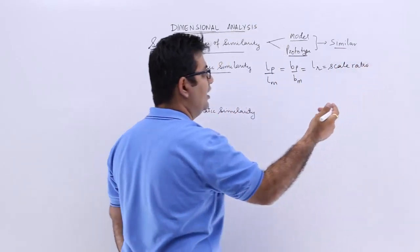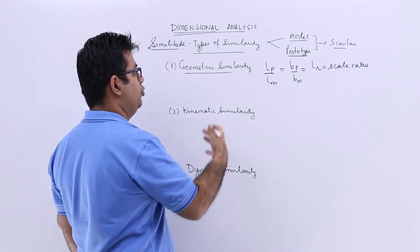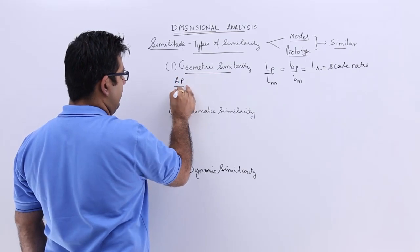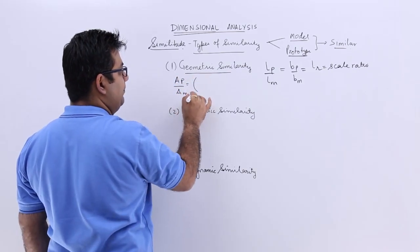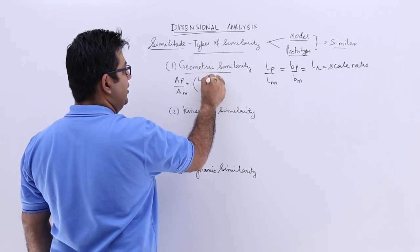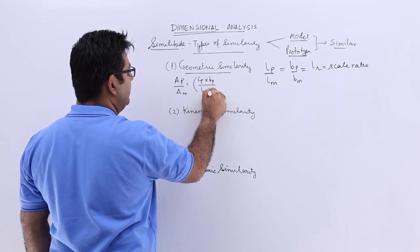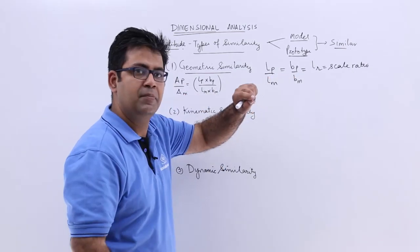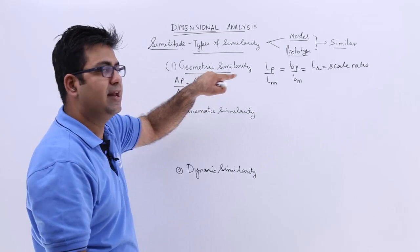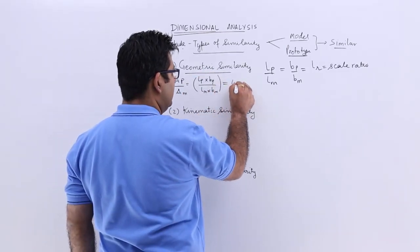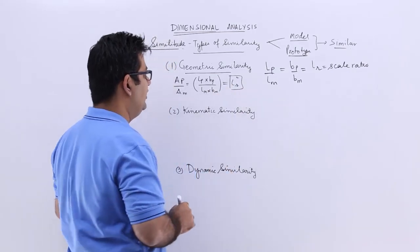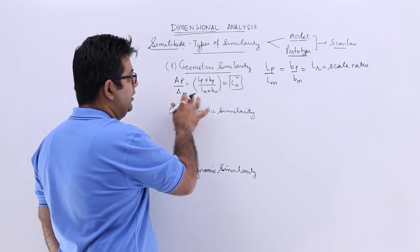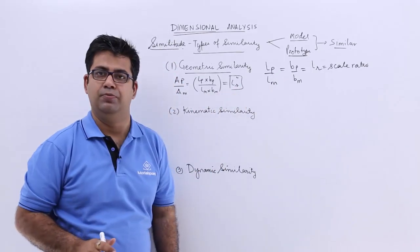Now if I have to take the ratio of the areas of proto and the model, you will have AP upon AM, where AP is LP into BP and AM is LM into BM. Now what is LP upon LM? This is LR. Again BP upon BM is LR. You get LR into LR, which is LR square. So the ratio of the areas of the prototype and the model is the square of the scale ratio.